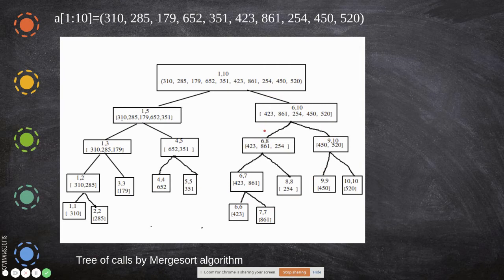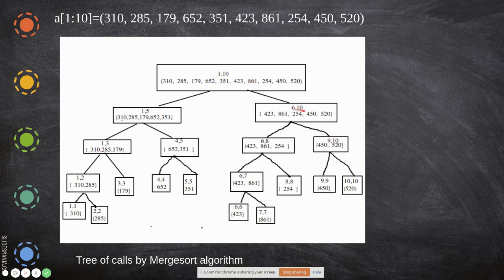I'll demonstrate this with a recursive tree structure. Initially with 10 elements, low=1 and high=10. The mid value is (1+10)/2 = 5. So we split into indices 1 to 5 and 6 to 10. Applying merge sort again on 1 to 5: mid = (1+5)/2 = 3. So we get 1 to 3 as the first sublist and 4 to 5 as the second.